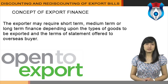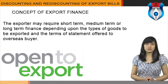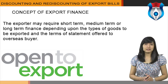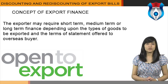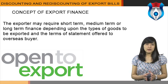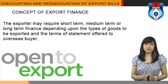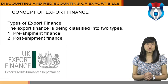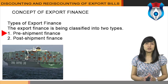The concept of export finance: the exporter may require short-term, medium-term, or long-term finance depending upon the types of goods to be exported and the terms of payment offered to the overseas buyer. Short-term finance is required to meet working capital needs. Working capital is used to meet the regular and recurring needs of a business firm, which refer to purchase of raw material, payment of wages and salaries, and expenses like payment of rent, advertising, etc. The exporter may also require term finance.